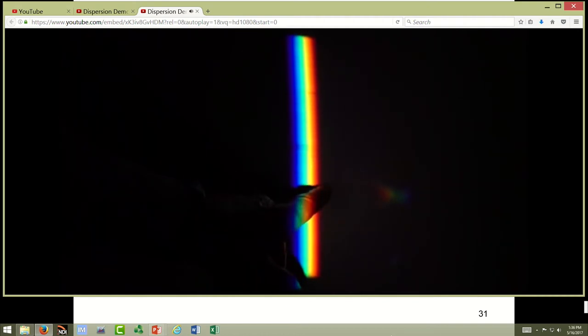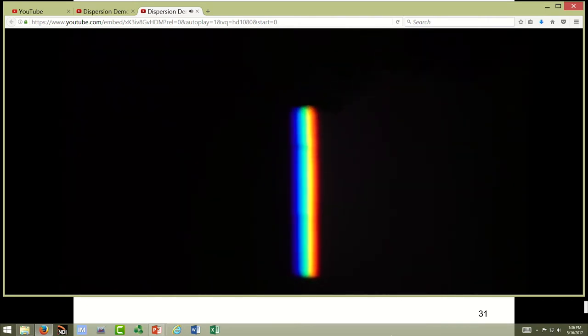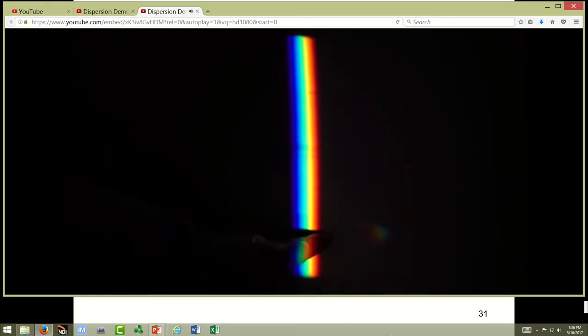And the longer wavelengths, those of red, are refracted the least, thereby spreading this, what used to be a white light into its component colors.